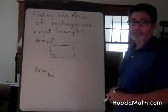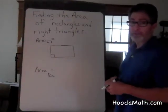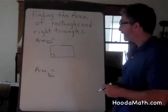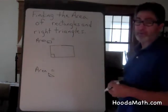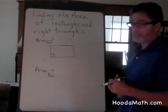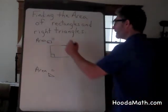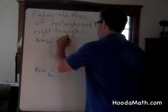Finding the area of rectangles and right triangles. The formula for the area of all rectangles is very simple. You multiply the length times the width.